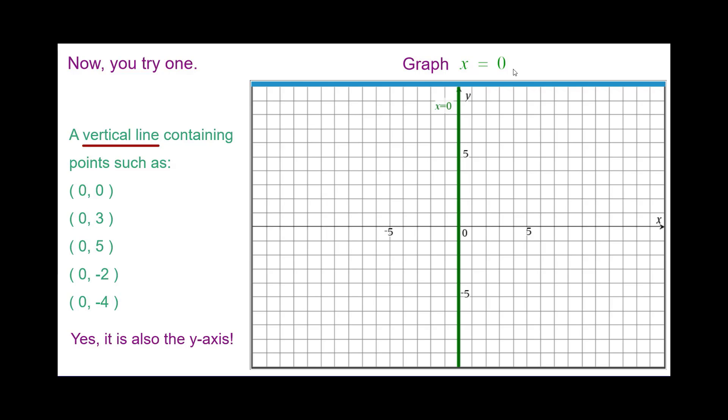The graph of x equals 0 is a vertical line containing such points as these and yes, it is also the y-axis. The equation of the y-axis is x equals 0 and that's a good thing to know.